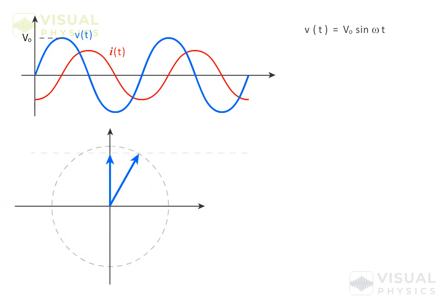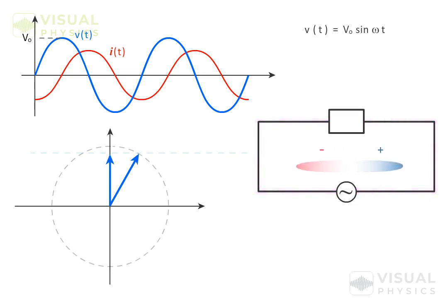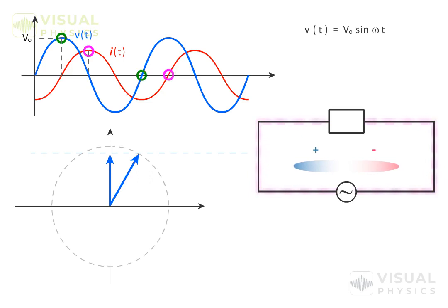We will also explore in this chapter that when a source of alternating voltage drives an alternating current in a circuit, then voltage and current are generally not in phase — that is, they do not achieve their maximum values at the same time and do not become zero at the same time.